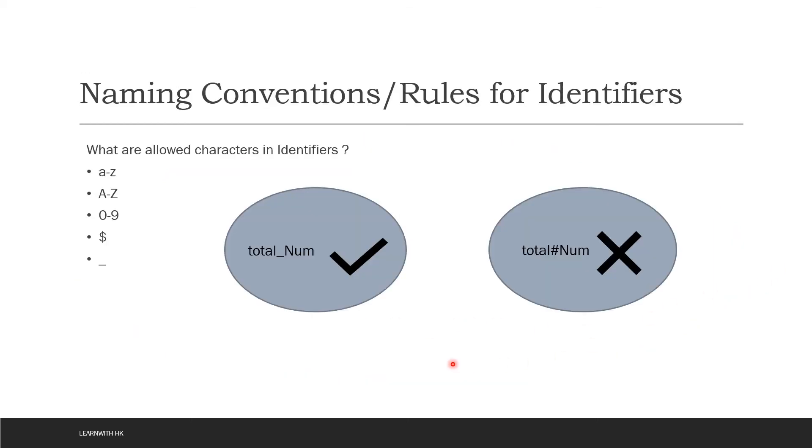Then there are some naming conventions or rules for identifiers. If you have to consider what are the characters allowed in identifiers, the characters allowed are small a to z, capital A to Z, numbers from 0 to 9, then a special symbol dollar and an underscore. These are the only allowed characters you can use while naming your identifier.